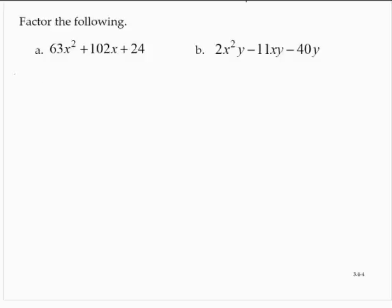So the first thing I'm going to do is factor out the 3. So I'd have 3 times 21x squared plus 34x plus 8. That's a 21 there.